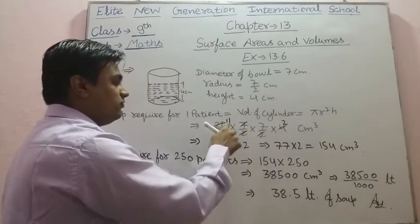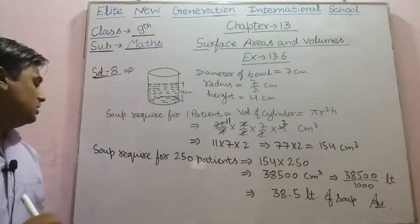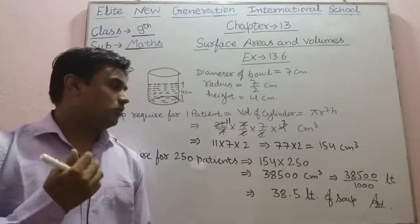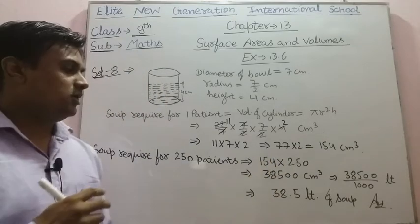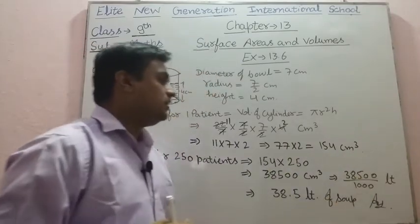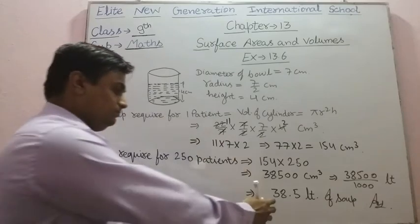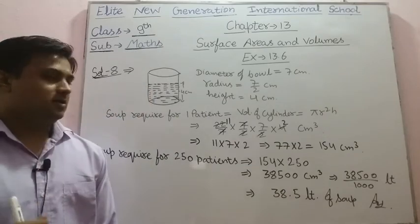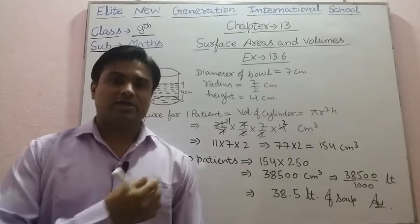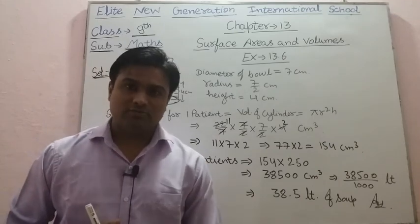Solving: the 7 cancels, 22 becomes 11, and 4/2 = 2, giving 11 × 7 × 2 = 154 centimeter cube. That is the soup required for one patient. For 250 patients: 154 × 250 = 38,500 centimeter cube. Converting to liters by dividing by 1000 gives 38.5 liters. So the hospital has to prepare 38.5 liters of soup daily. This completes the exercise. Your homework is to complete all remaining questions, and in the next session we will start the next exercise. Thank you for watching and have a nice day.